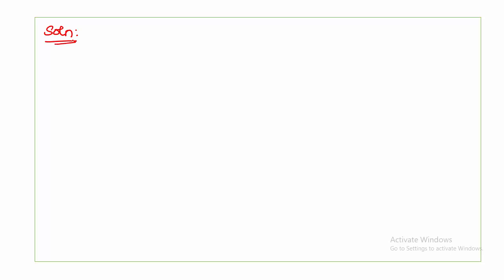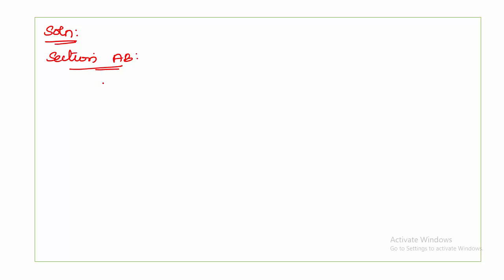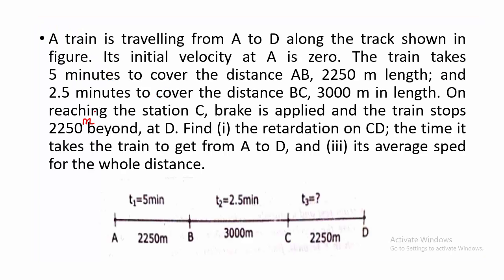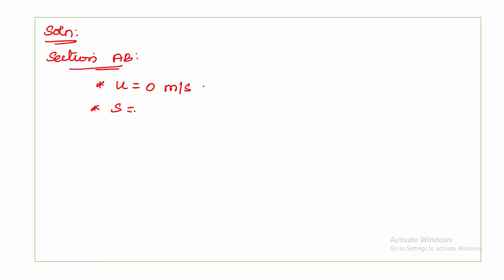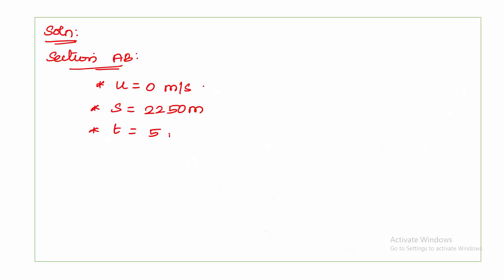First we are going to consider section AB. The train starts from velocity 0 meters per second, so initial velocity U is 0 m/s. The distance travelled by the train in section AB is 2250 meters, so S is 2250 m. The train takes 5 minutes to cover section AB, so T is 5 minutes, which in SI units is 5 × 60 = 300 seconds.